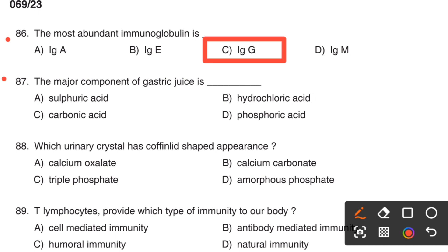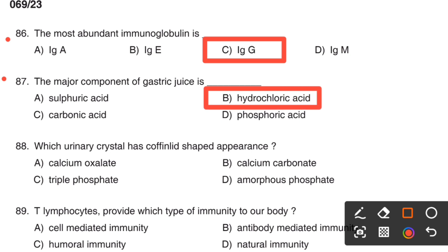Next question. The major component of gastric juice is: Option A, Sulphuric acid. Option B, Hydrochloric acid. Option C, Carbonic acid. Option D, Phosphoric acid. The right answer is Option B, Hydrochloric acid. The major component of gastric juice is hydrochloric acid.